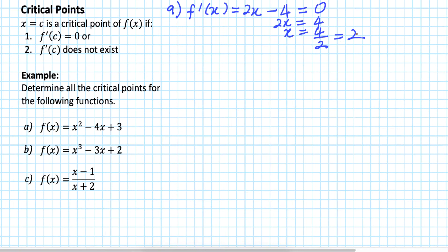If we substitute x with 2: 2 times 2 equals 4, and 4 minus 4 you should get equal to 0. If you did not get 0, it means that your x value is wrong.